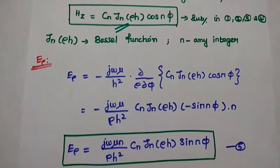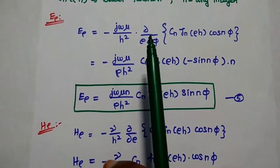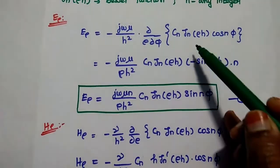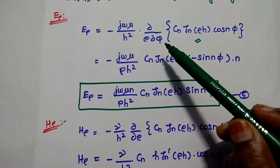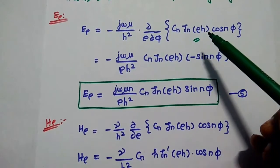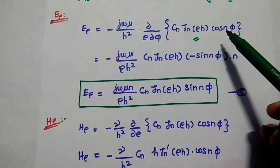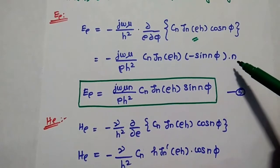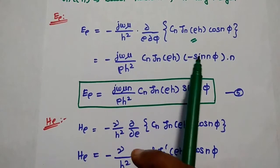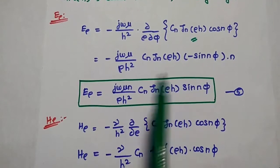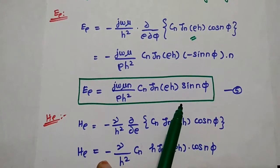First we are going to find the value of the E_rho component. E_rho is equal to minus j*omega*mu by H² times (dou / rho dou phi) of Hz, which is replaced with Cn * Jn(rho*H) * cos(n*phi). We differentiate with respect to phi. We can take Cn * Jn(rho*H) outside as a constant. The differentiation of cos(n*phi) is minus sin(n*phi) times n. Then we get E_rho equal to plus j*omega*mu*n / (rho*H²) * Cn * Jn(rho*H) * sin(n*phi). Consider this as the fifth equation.